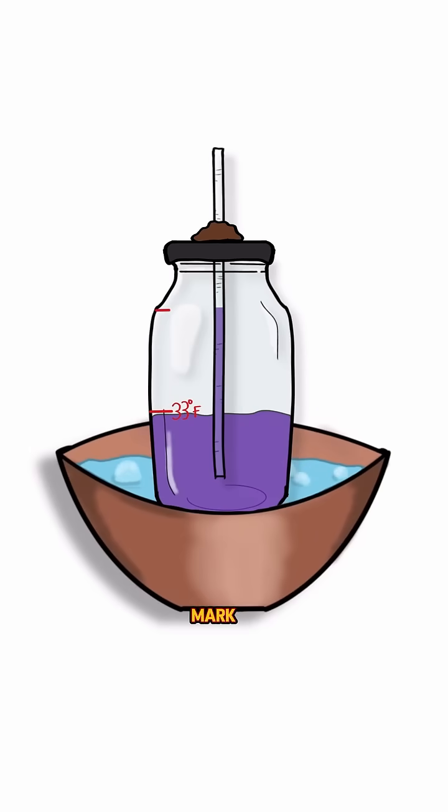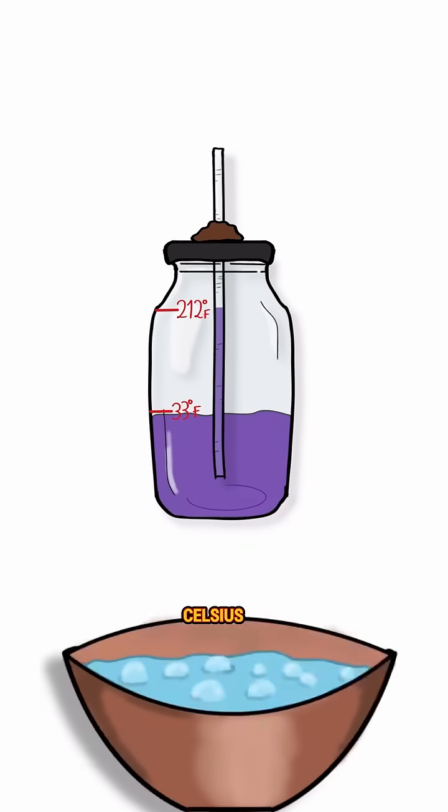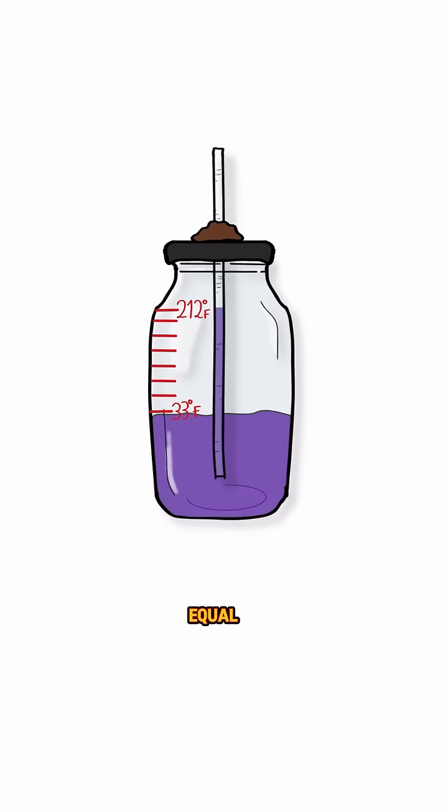Then put it in boiling water, and mark that level as 212 degrees Fahrenheit, which is 100 degrees Celsius. Finally split the space between those marks into equal steps.